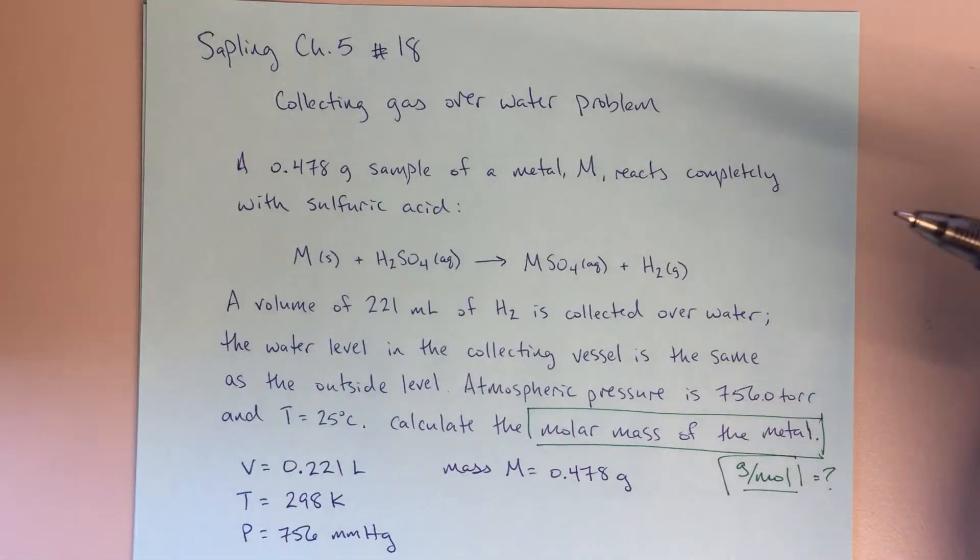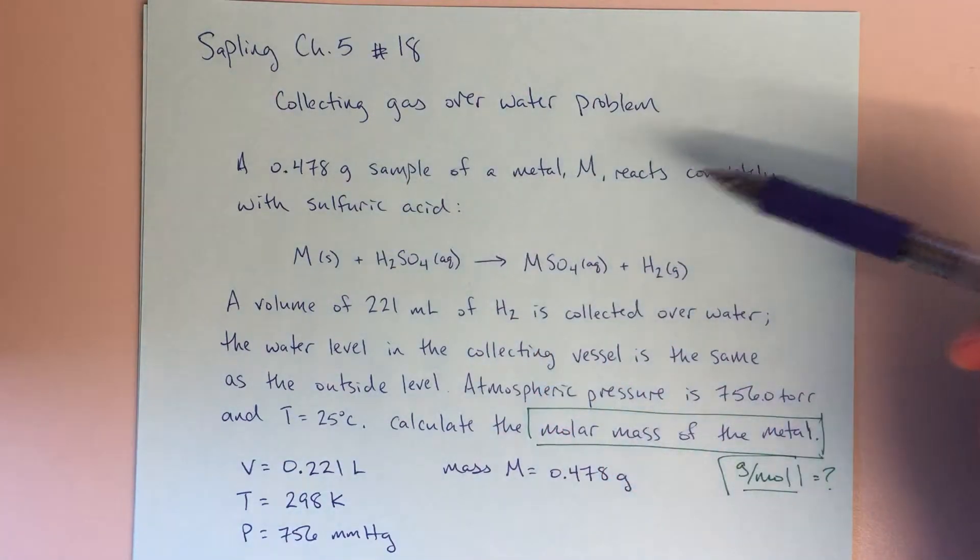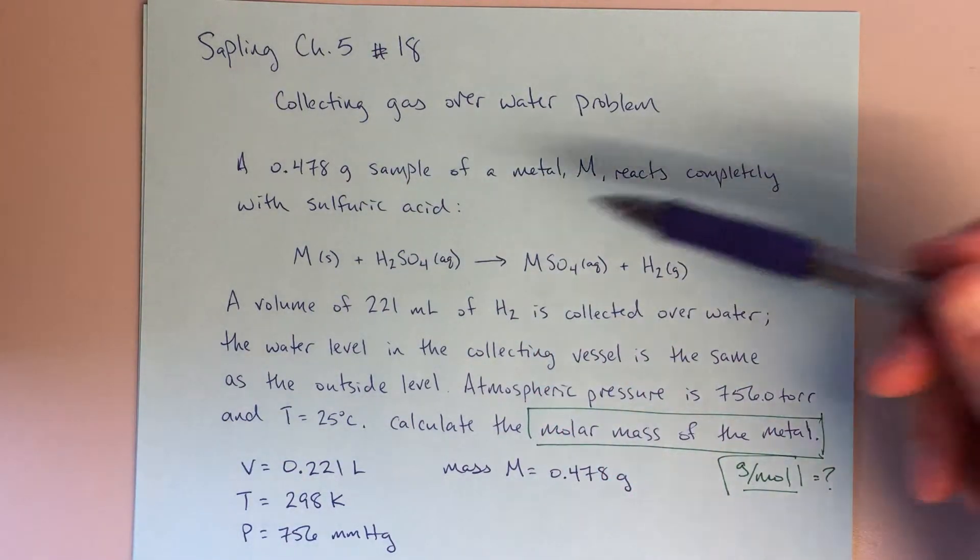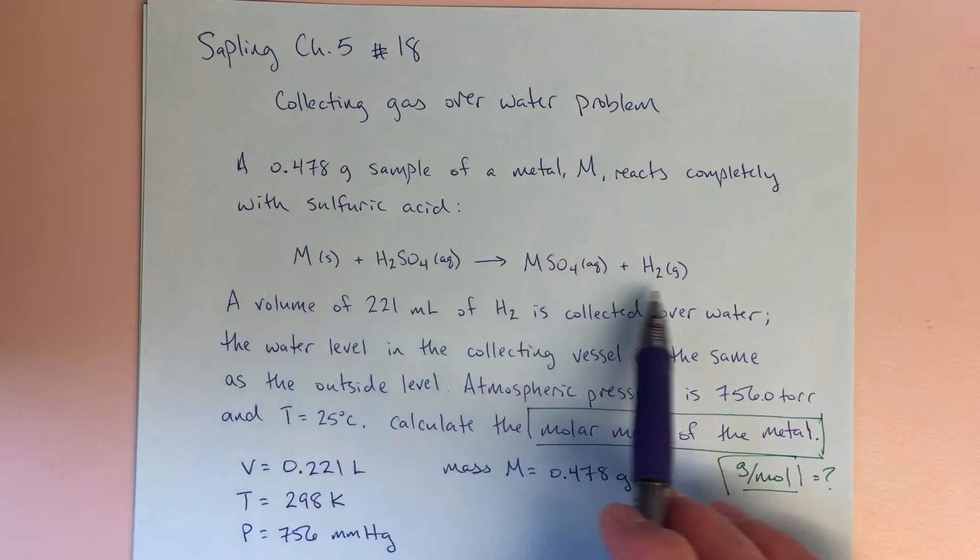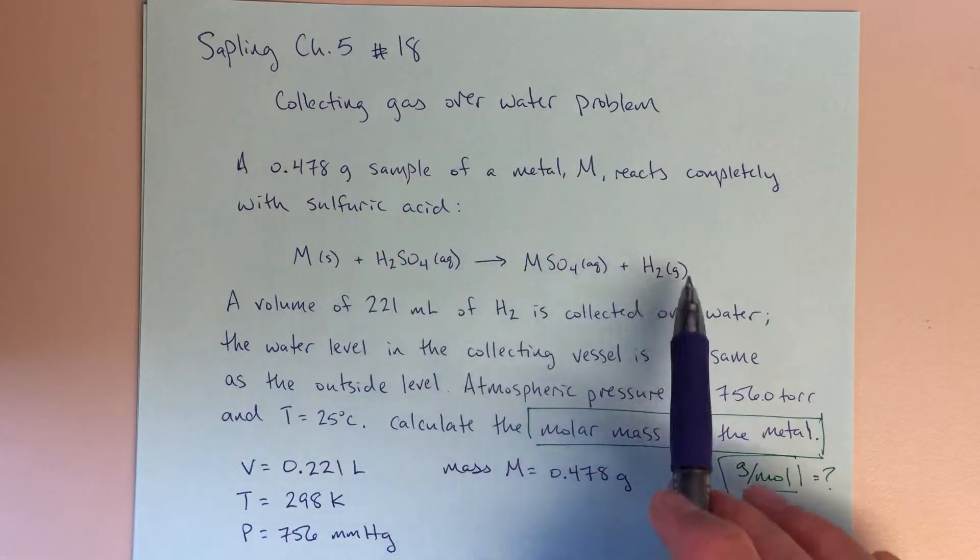This is what we'd really call a collecting gas over water problem. So we are told that we're going to have a 0.478 gram sample of some metal. That metal is going to react with sulfuric acid according to this balanced chemical equation here to generate some H2. That's really the key, right, we're generating H2.